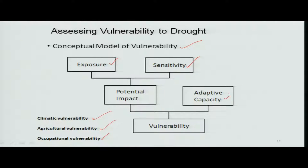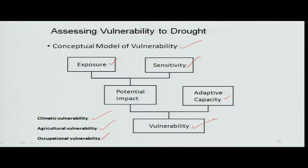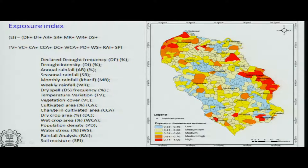Everything put together is what we call vulnerability. Vulnerability is nothing but how vulnerable or sensitive the people in those regions are due to the occurrence of a drought — that is, the availability or non-availability of water — which leads to livelihood issues.